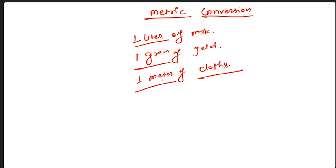You can't say one meter of gold or one meter of milk. Similarly, you can't say one gram of cloth or one liter of cloth. For every conversion, we have different metrics. Each metric is calculated based on the material. That is a different discussion.